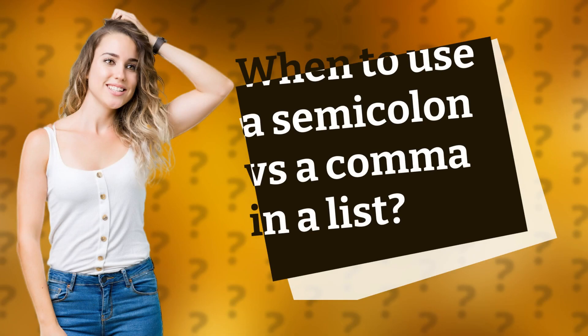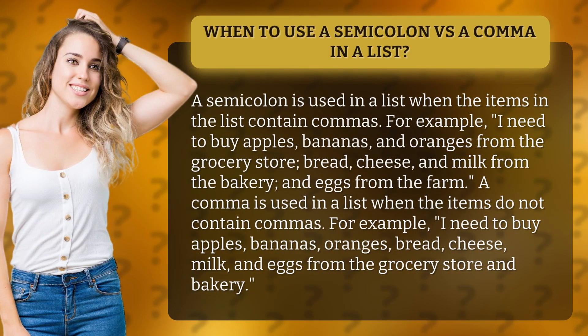When to use a semicolon versus a comma in a list. A semicolon is used in a list when the items in the list contain commas. For example, I need to buy apples, bananas, and oranges from the grocery store; bread, cheese, and milk from the bakery; and eggs from the farm.